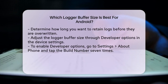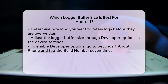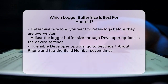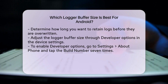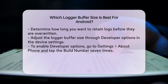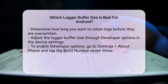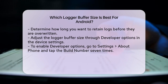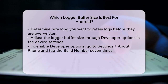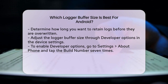Now let's talk about how to adjust the logger buffer size on your Android device. You can do this through the developer options in your settings. To enable developer options, go to Settings, then About Phone, and tap the build number seven times. Once enabled, navigate to Developer Options, scroll down to the Logger Buffer Size option, and choose a size that suits your needs. You can select sizes ranging from off to 16 megabytes.